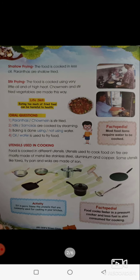The next is shallow frying — food is cooked in less oil. Parathas are shallow fried; we don't use a lot of oil. Stir frying uses very little oil and high heat — chow mein and stir-fried vegetables are made this way. Eating too much fried food can be harmful to our health, so we should avoid a lot of fried food.